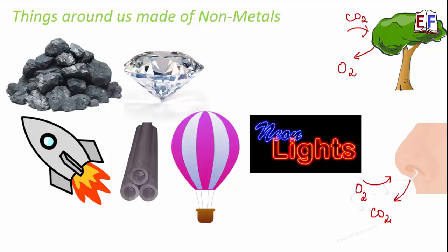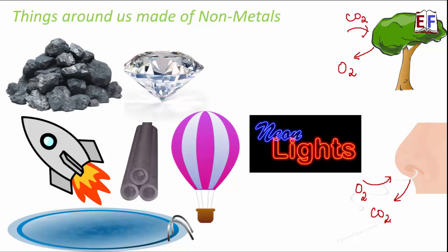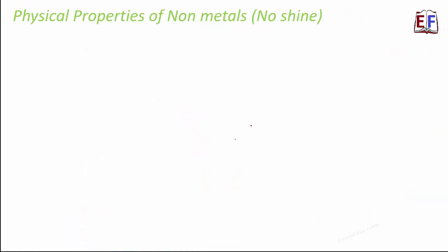Graphite is not only used in pencil leads but also in batteries. Neon lights — nonmetal again. Helium air balloons that go up high in the air — helium is a nonmetal. In swimming pools, chlorine is used for disinfection of the water — and chlorine is a nonmetal. Iodine is an antiseptic which is also a nonmetal. Most of the fertilizers used for agricultural purposes contain nonmetals like nitrogen and phosphorus.